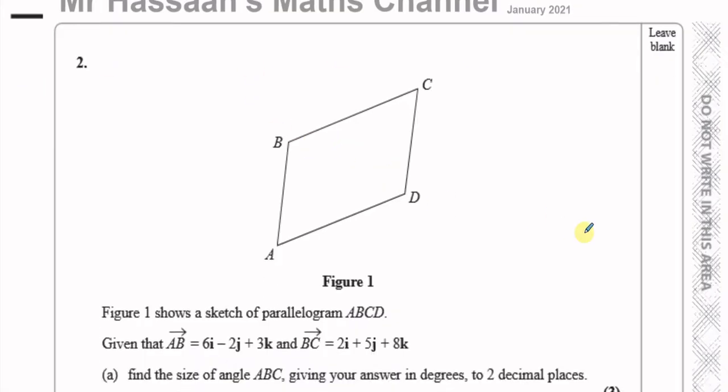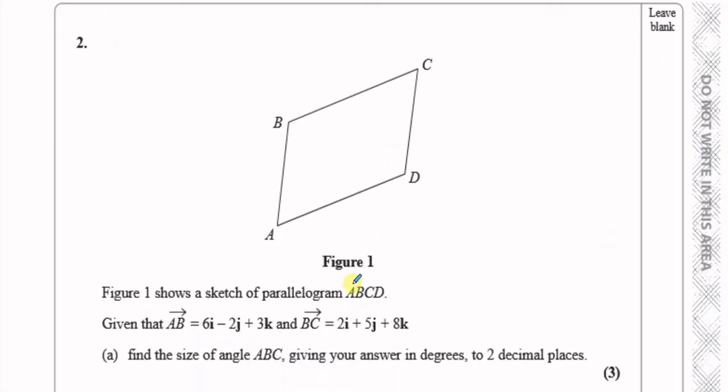This question is about vectors, and we've given a sketch of a parallelogram ABCD. So we know for sure it's a parallelogram. The opposite sides are parallel and equal in length. It says AB is 6i minus 2j plus 3k. So this is 6i minus 2j, AB.